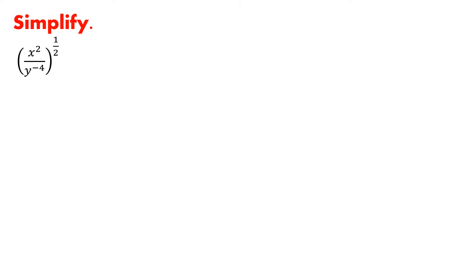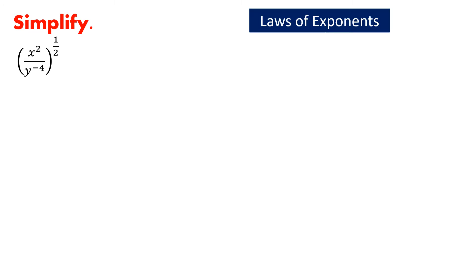Before we simplify expressions like these, let us review the laws of exponents. If we have x to the power a multiplied by x to the power b, where x is some generic base and a as well as b are exponents, how would we simplify that?